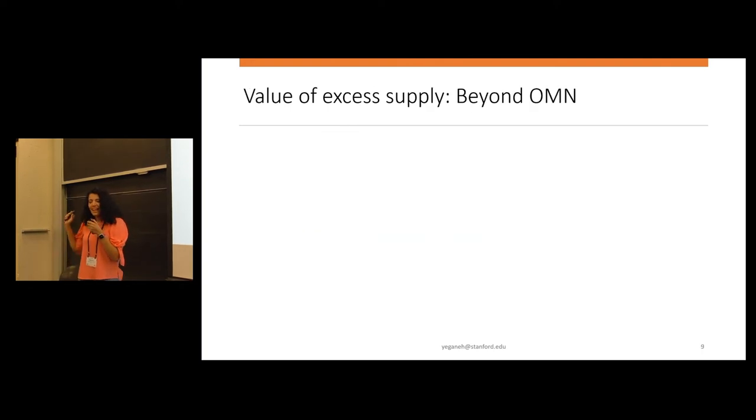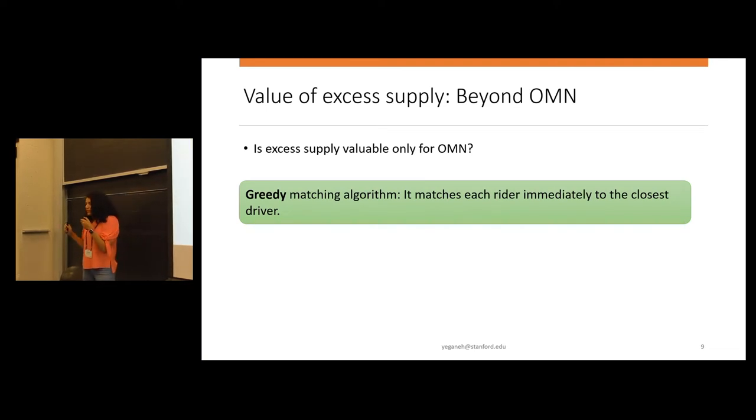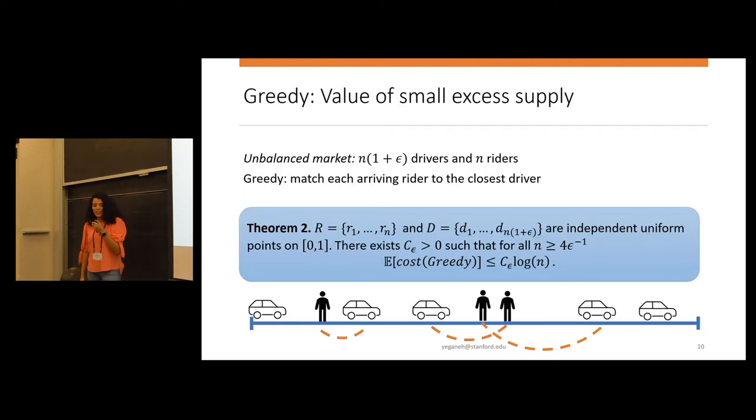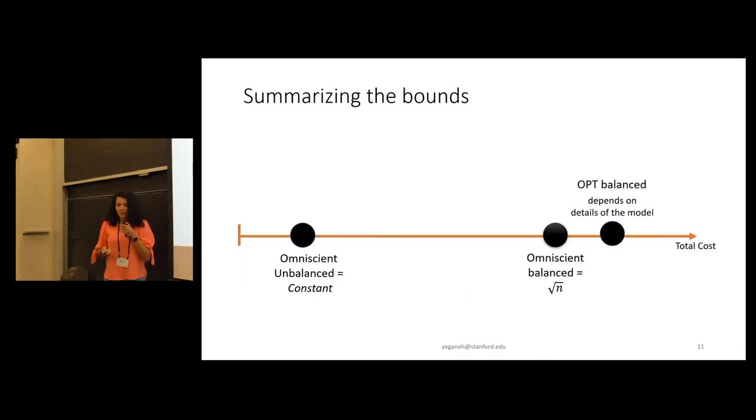So now, as a myopic algorithm, we choose a very simple one. It's just greedy. When a rider arrives, I match it to the closest driver. Still, for greedy, it doesn't matter if I have waiting costs or not. It's, of course, naive and makes mistakes. But we will see that it can beat omniscient in an unbalanced market. So the first result is that if you have epsilon n more drivers, then the cost of greedy is bounded by some constant times log n. So remember that omniscient was square root n before. And now greedy in unbalanced market is log n, closer to the omniscient in the unbalanced market.